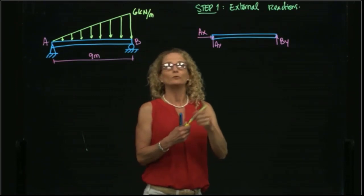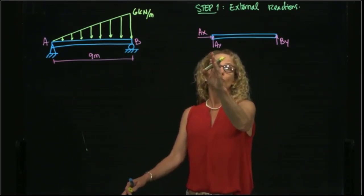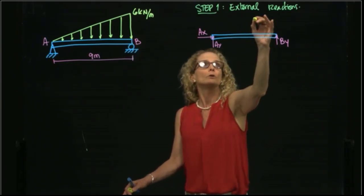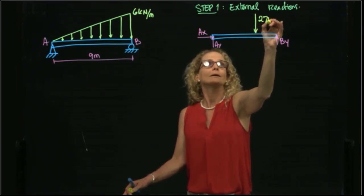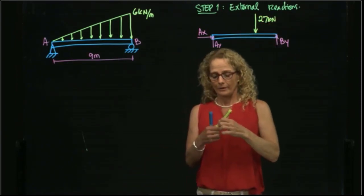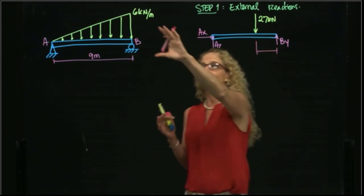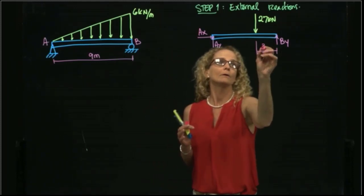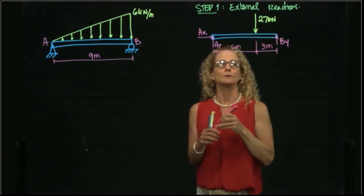That gives me 27, and I will place it at two-thirds of the skinny side, or one-third of the heavy side. So I will place it right here, and that's 27 kilonewtons, and it's either at one-third of the heavy side, which is one-third of 9 is 3, or two-thirds of the skinny side, which is 6 meters.